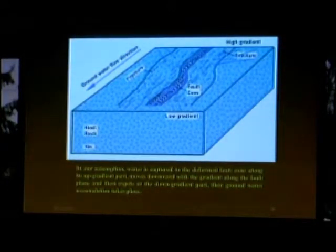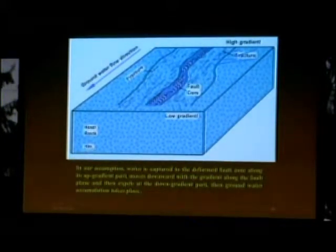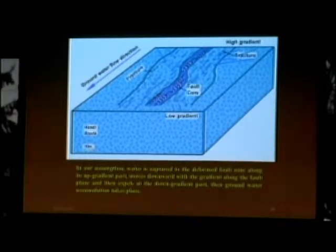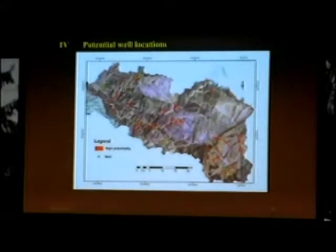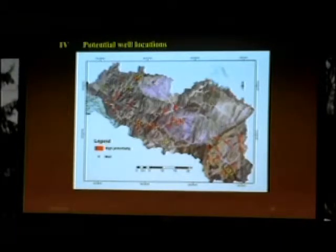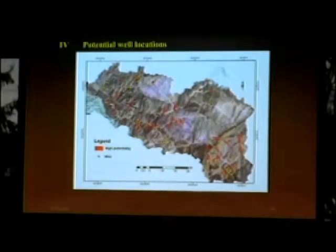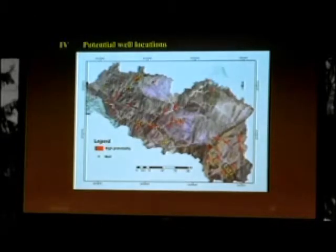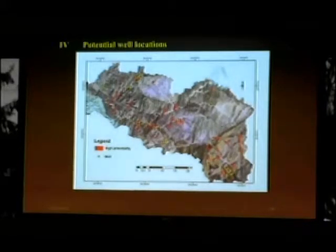Returning to our conceptual model assumption — water is captured into the deformed fault zone along its upgradient part. By integrating all data in a GIS environment, we produced a map showing potential well locations, highlighted in red as areas of high potentiality. We correlated these areas with existing wells in the study area and found a good correlation — most of our identified high-potential areas already have wells dug there, validating our model. There are also additional high-potential areas still suitable for digging new wells.